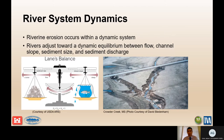Rivers are part of a very dynamic system. Rivers adjust toward a dynamic equilibrium that balances the flow, the channel slope, the sediment size, and the sediment discharge. If there's a disruption in any one of these it can cause system-wide issues such as erosion. So the erosion occurring at a particular site might be part of a larger system issue.